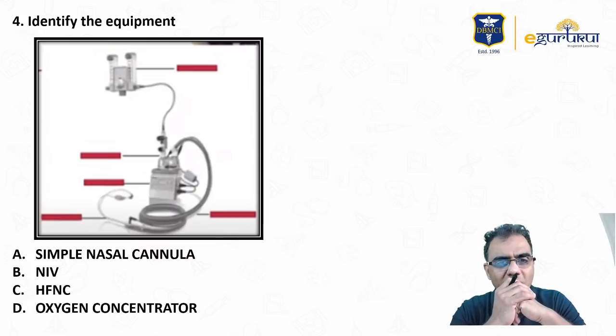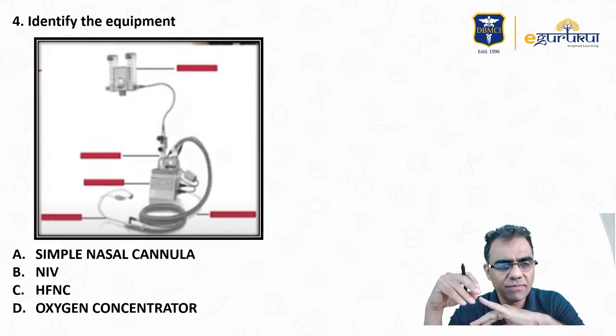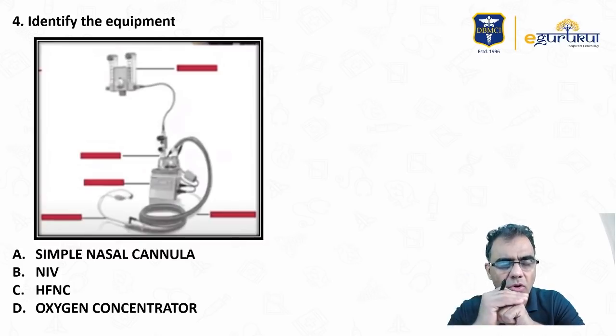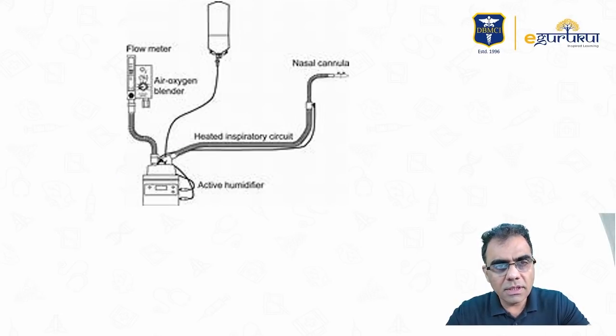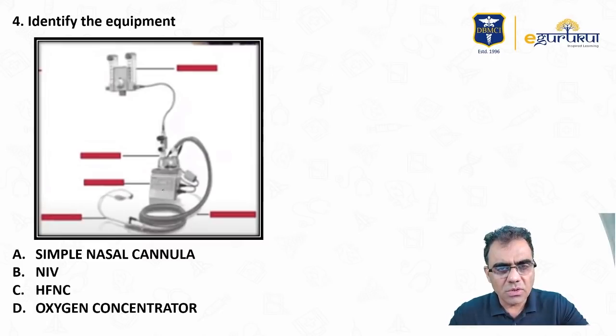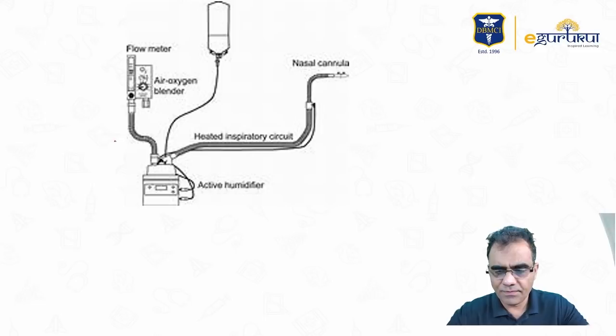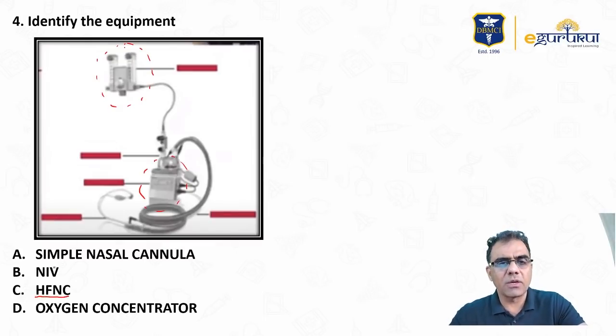Question number four. Identify the equipment. Simple nasal cannula, NIV, HFNC high flow nasal cannula, oxygen concentrator. Very much again expected question on high flow nasal cannula. I think diagram is not that clear, however in exam it definitely would have been much clearer. These photographs are memory based. So this is high flow nasal cannula. See, high flow is coming and then there is humidifier, and then you give humidified gases to the patient. This is humidifier and this is for high flow of oxygen and this is a nasal cannula.